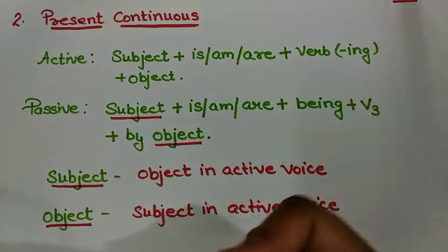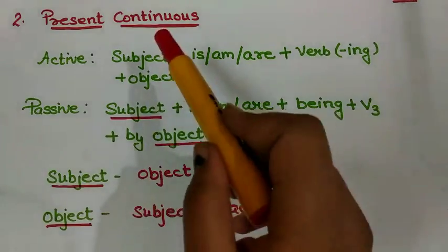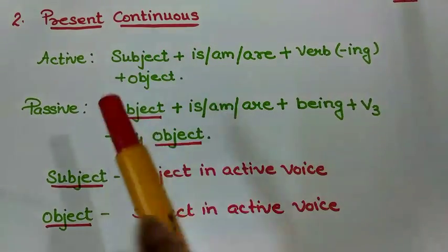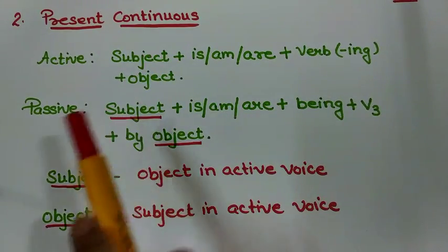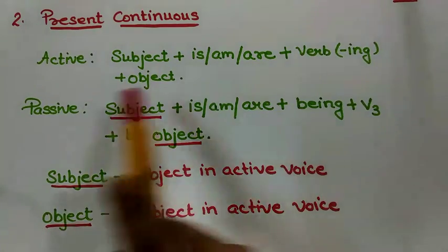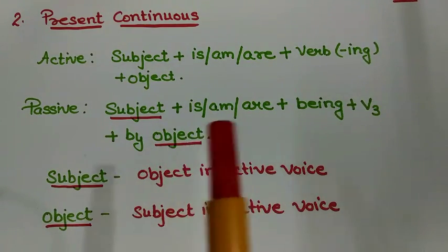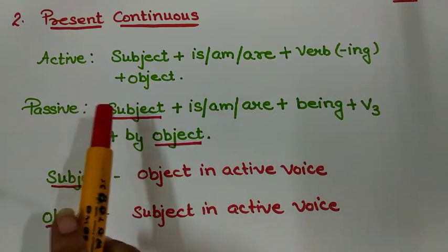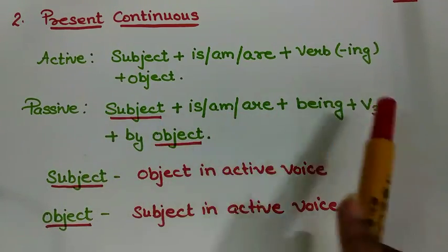In some books, if it is subject they write object here, which is logically wrong because the formation of a sentence should be like this: subject, then verbs, then object.